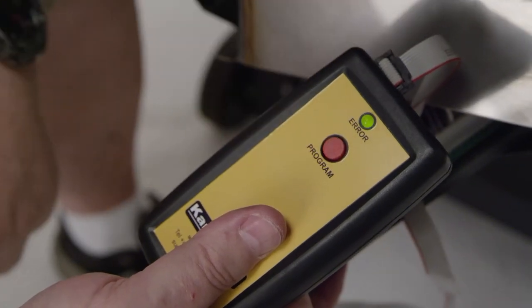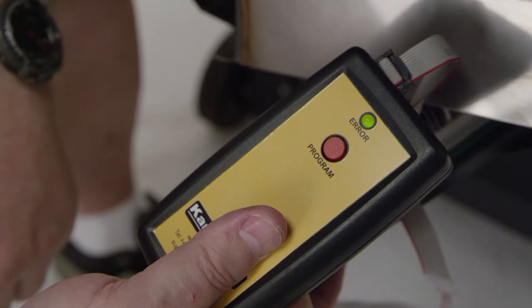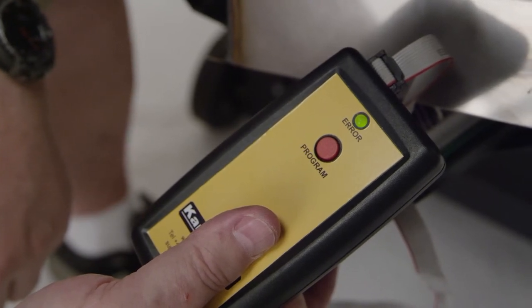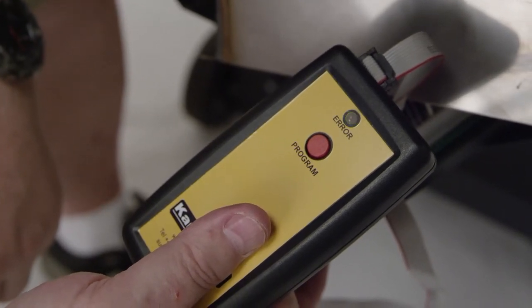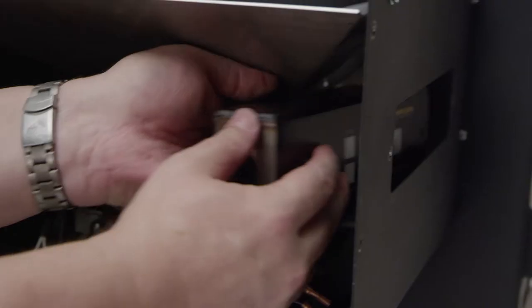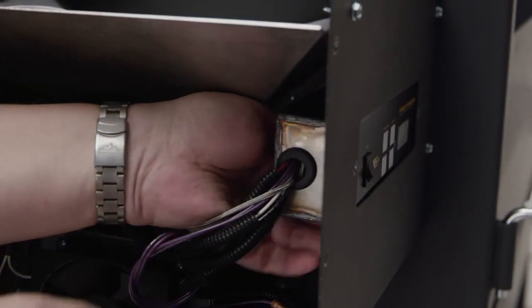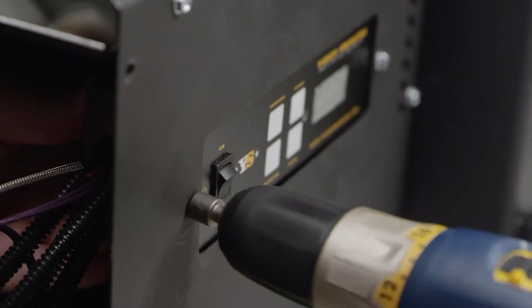Press and release the program button to initiate the update. The green light will blink rapidly for several times. When the light ceases to flash, the update process is complete. Reinstall the control box assembly into the front of the pellet hopper using the two screws.